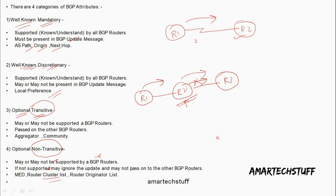There are four major categories of BGP attributes. Well-known mandatory: supported by all routers and must be present in each update. Well-known discretionary: supported by all routers but may not be present in each update. Optional transitive: may not be supported by all routers, but if not supported, will still be passed on to the next router. Optional non-transitive: if not supported, may not be passed to the next router. If you mention these points in your answer, you can easily clear this interview question. There are also many detailed attribute questions — like what is local preference, what is MED, how and when they are used.